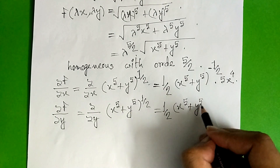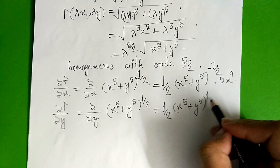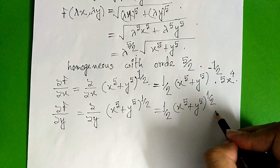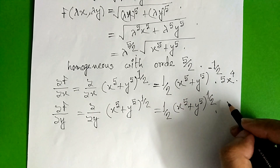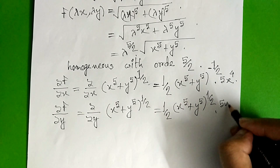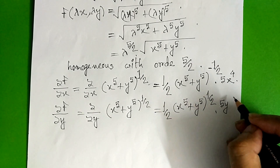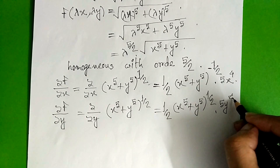So 5 same half. Here we have 5y⁴ — partial derivative with respect to y gives 5y⁴.